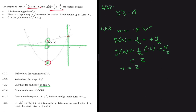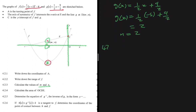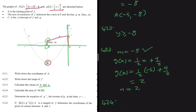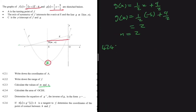For 4.2.4, let's calculate the area of OCDE. OCDE is a trapezium. Rather than using the trapezium formula, I'll divide it into a triangle and a rectangle and calculate the areas separately — sticking to the basics. Let's introduce a point K on the y-axis at the height of D.